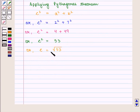Now, taking the positive square root of 53, we get the value of c as 7.3 approximately.